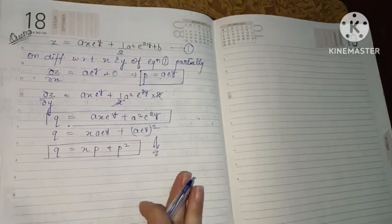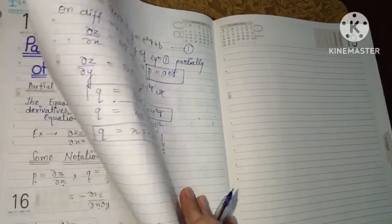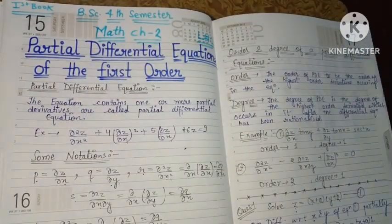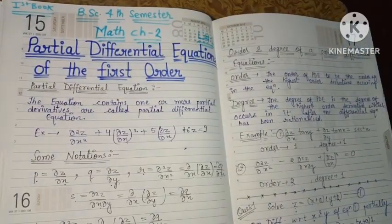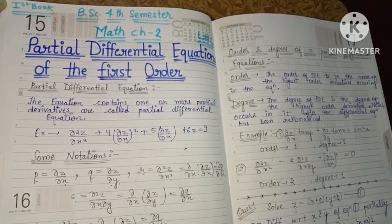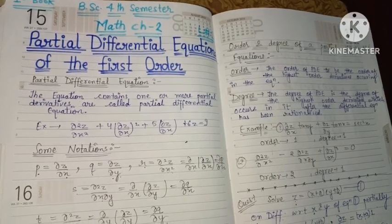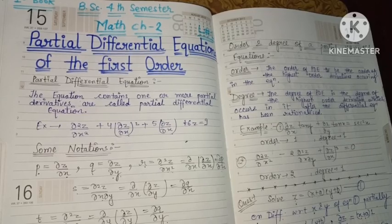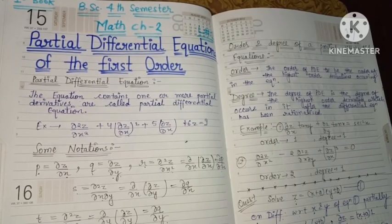I think friends, it is now clear how questions on partial differential equations are done. The answers to these questions come in terms of p and q — that is the characteristic of these questions. If you have any doubt, please let me know in the comment box. Thank you friends for watching — please share, like, and comment.